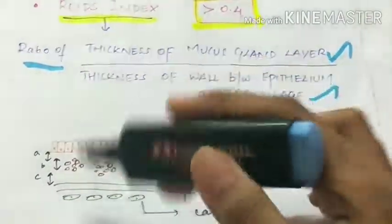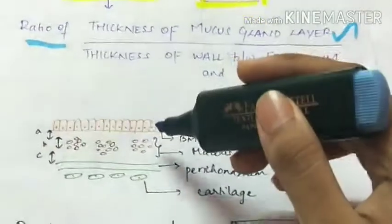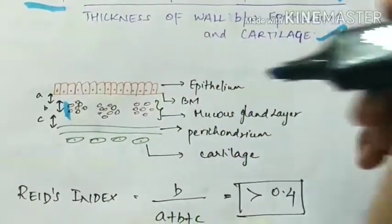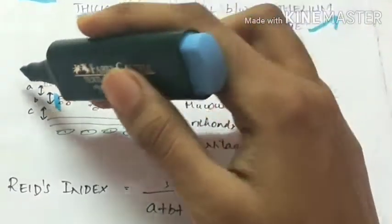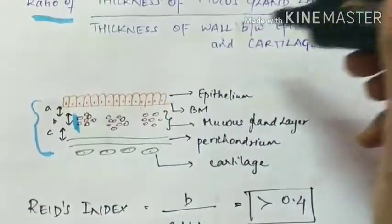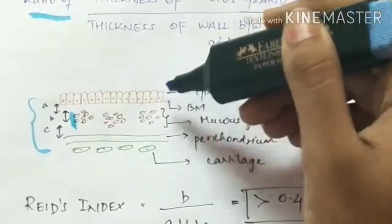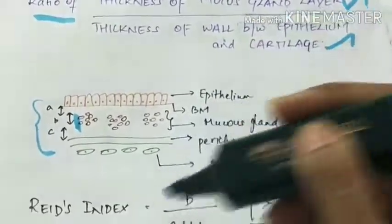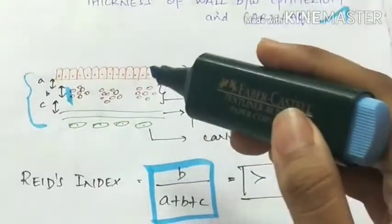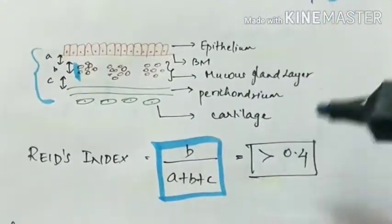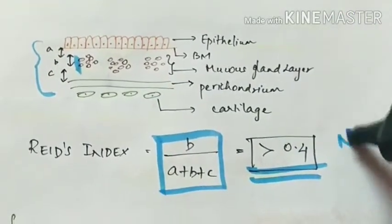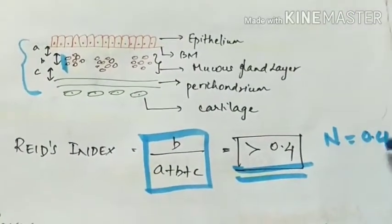In this picture, B is the thickness of the mucous gland layer and A plus B plus C is the thickness of the wall between the epithelium and the cartilage. So Reid's index is B divided by A plus B plus C, which is more than 0.4 in chronic bronchitis. Normal is equal to 0.4.